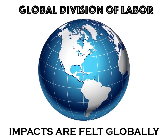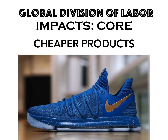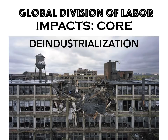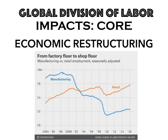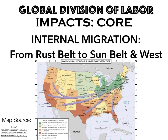The global division of labor has impacts felt globally. In the core, one big impact is cheaper products — shoes, clothes, electronics made in the periphery and semi-periphery are cheaper due to lower labor costs. We also have de-industrialization, with old factories especially in the Rust Belt shuttered. Economic restructuring is occurring as retail jobs increase and manufacturing jobs decrease — a shift from a manufacturing to a service-based economy. Another major impact is internal migration, with people moving from the Rust Belt and upper Northeast and Midwest to the Sunbelt and the West.